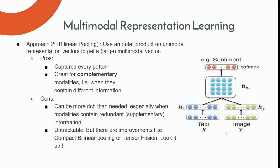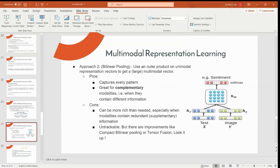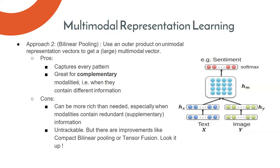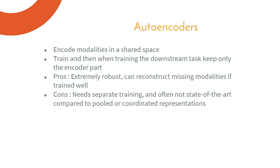That concludes the introduction to representation learning. Now, autoencoders are one technique for learning shared representations. If you have voice, image, and text, you can learn a shared representation with an autoencoder. During training, all parts of the autoencoder are trained, but we only keep the encoder when extracting representations, because we get the hidden representation from the encoder once trained.